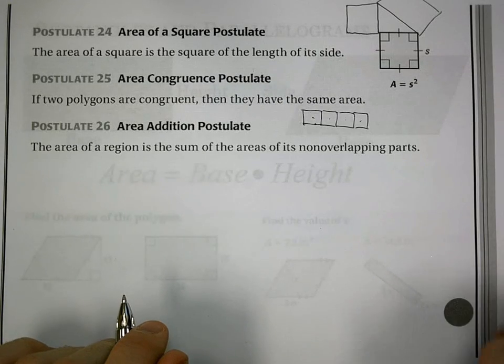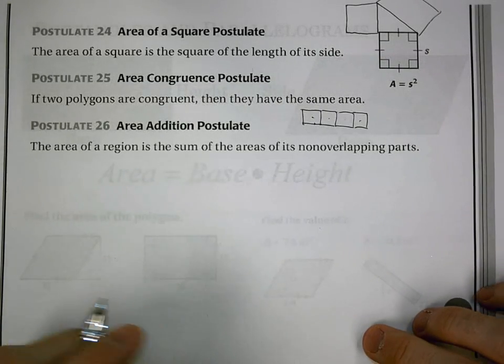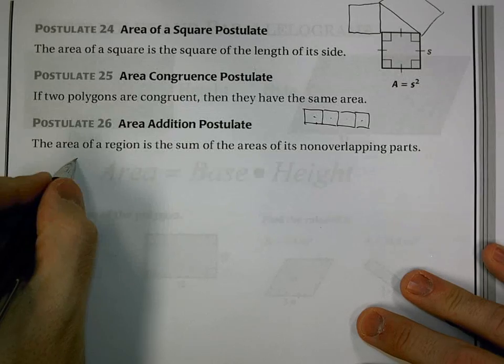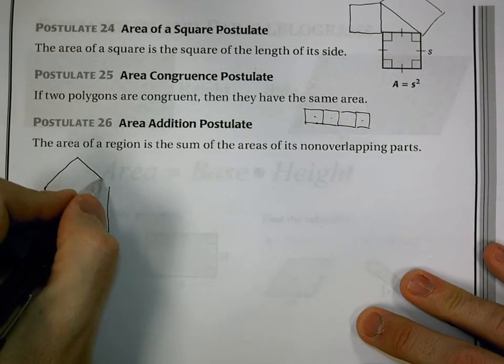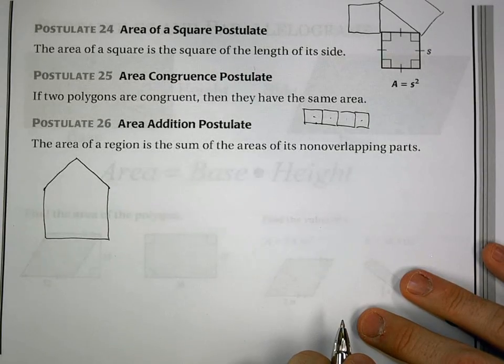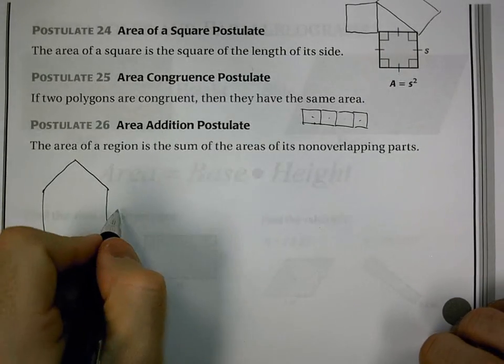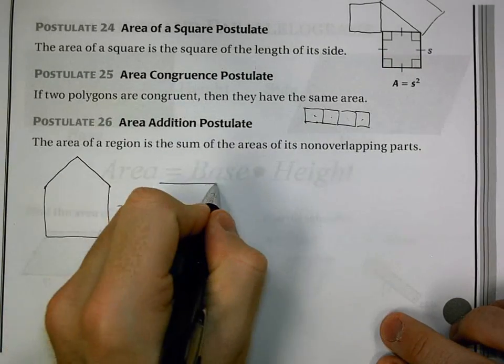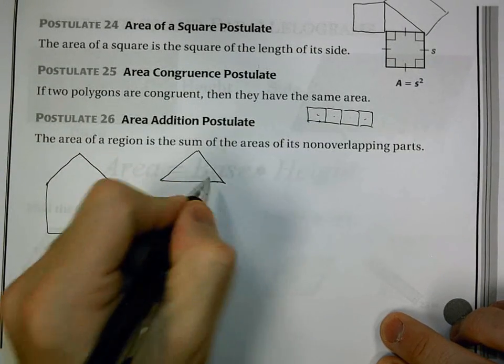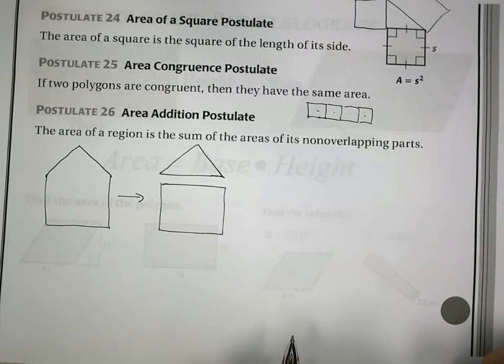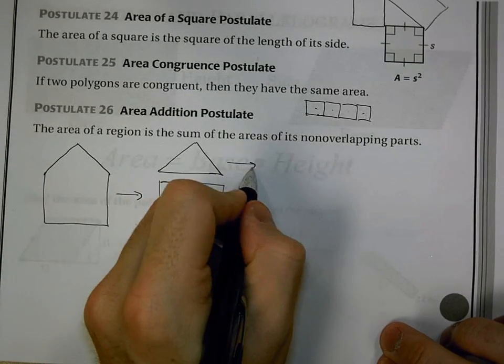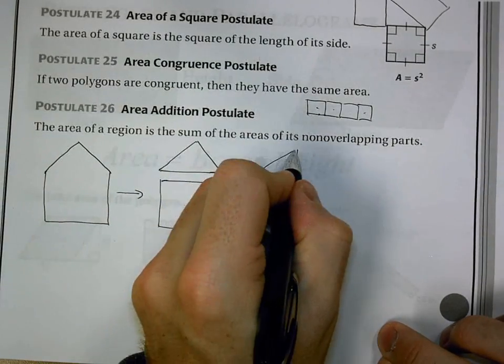Postulate 26 is probably the one we'll use more, and that's the area of the region is the sum of the areas of its non-overlapping parts. So let's say I have a shape that looks like this. I'm not going to have a formula for that one, but what I could do is break it up to two parts, such that it's a rectangle and now a triangle. Or I could go further and break that triangle up into two more parts.